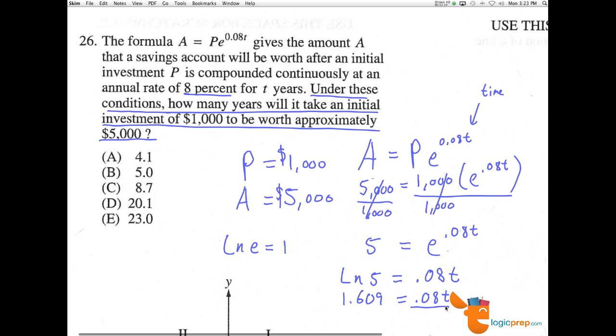We solve for T by dividing both sides by 0.08, and we get approximately 20.11 equals T. So 20.1 is the correct answer.